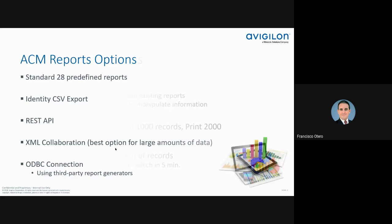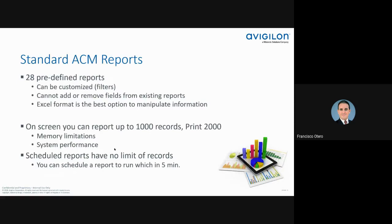Let's get started with standard reports. These are the reports that come in ACM preloaded, ready to go — the 28 reports. They can be customized with filters; you can go in and filter the reports. We cannot add or remove any fields, which is why I say you cannot truly customize it — you cannot modify how the report looks or the fields in there. They're pretty static when it comes to that.